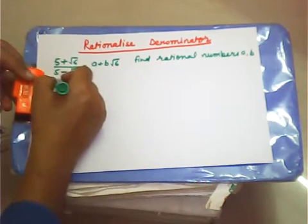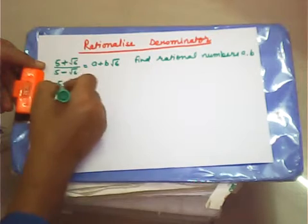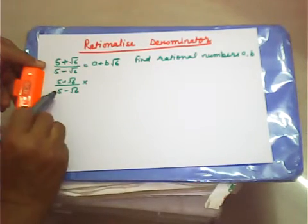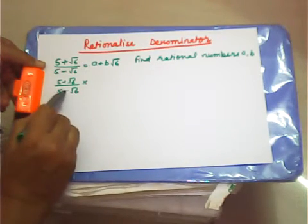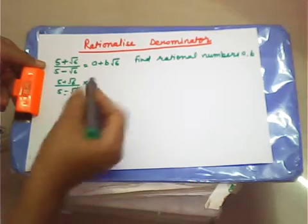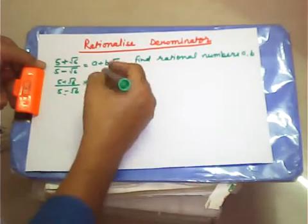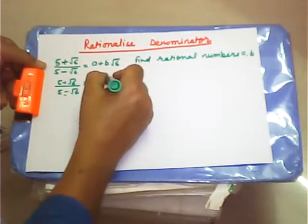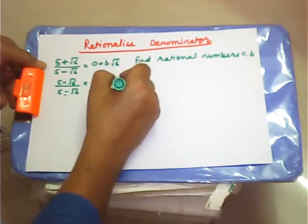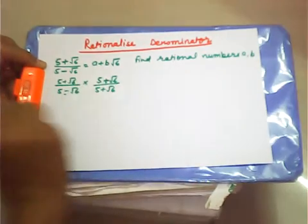We have 5 plus root 6 over 5 minus root 6. We have to write the opposite sign of the denominator — the opposite of minus is plus — so we multiply by (5 + root 6) over (5 + root 6).